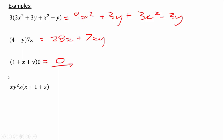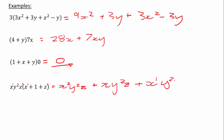What about xy²z times (x + 1 + z)? xy²z times x gives x²y²z. Then xy²z times 1 stays as xy²z, because multiplying by 1 leaves it unchanged. Then xy²z times z: remember z has an exponent of 1 and another z of 1, so z¹ times z¹ gives z². So the last term is xy²z². And that is our answer — you don't need to write x to the power of 1; I've just done that to show you.